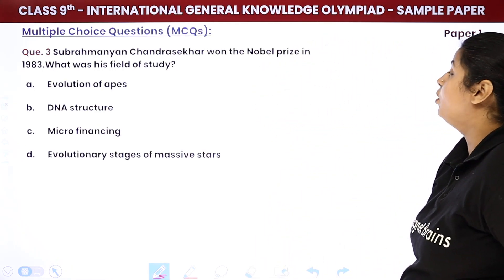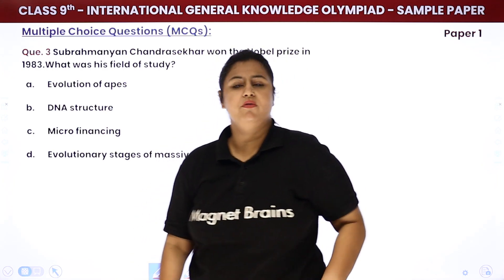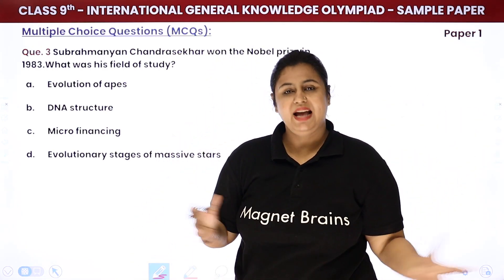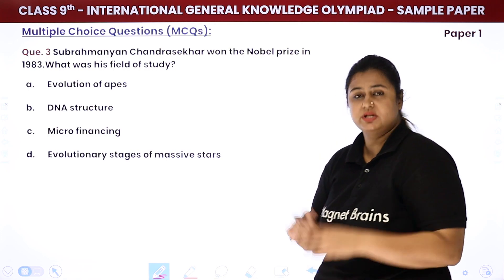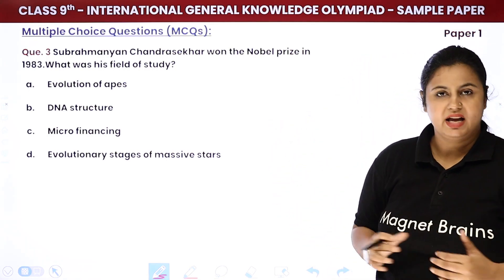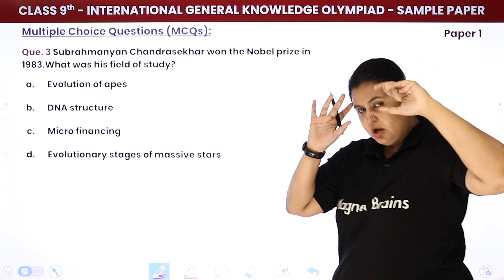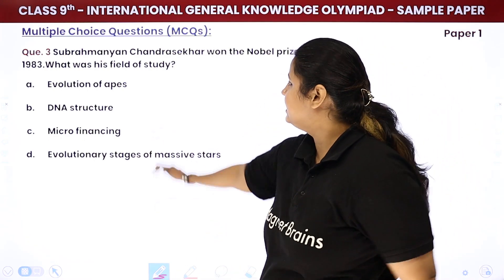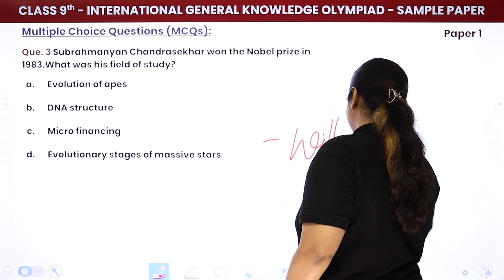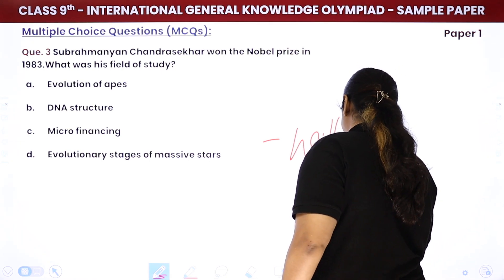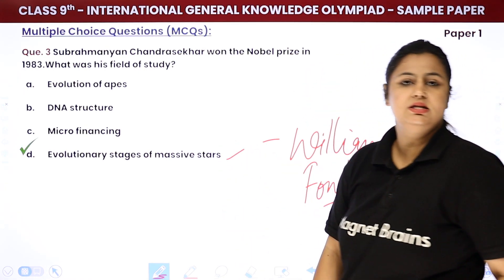Subrahmanyan Chandrasekhar won the Nobel Prize in 1983. When we talk about him, he is of Indian descent and went to the United States of America. He is known as an astrophysicist — when I say astrophysicist, think Big Bang Theory, think Sheldon. He won the Nobel Prize in 1983 alongside William Fowler, for work on the evolutionary stages of massive stars. The answer is D.